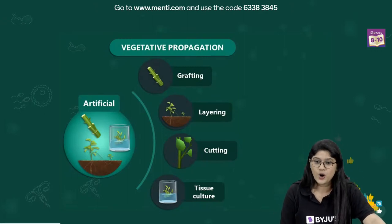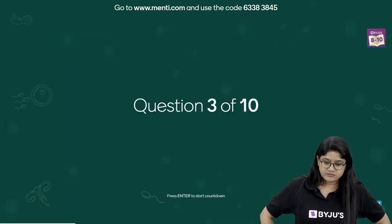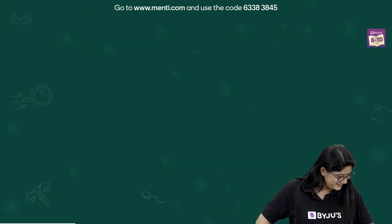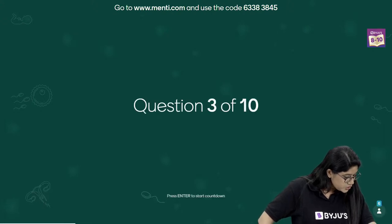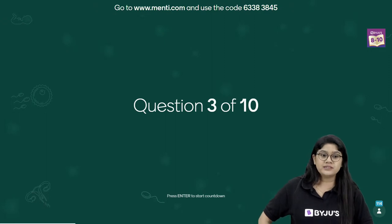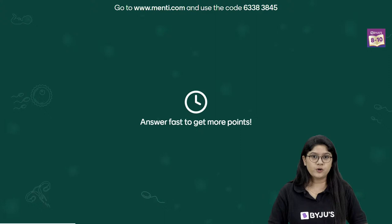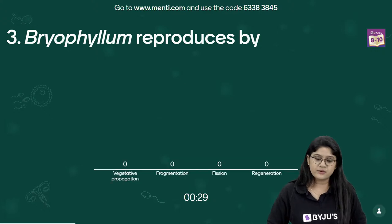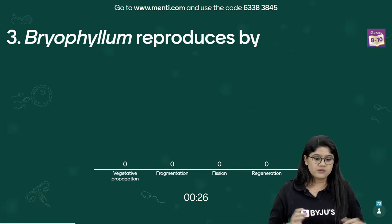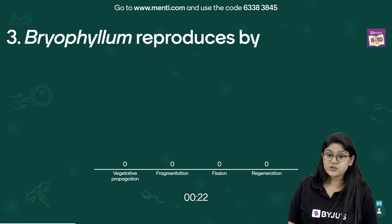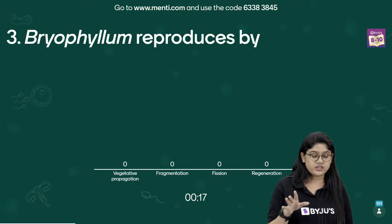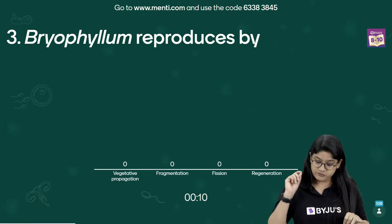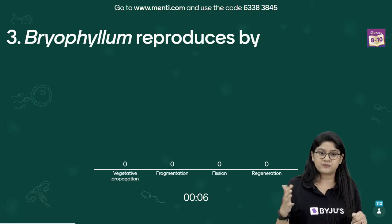Moving to question number three. The question is: Dryophyllum reproduces by — vegetative propagation, fragmentation, fission, or regeneration? We have just discussed these, so I'm sure you have a clear understanding.